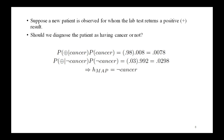We notice that while the posterior probability of cancer is significantly higher than its prior probability, the most probable hypothesis is still that the patient does not have cancer. As this example illustrates, the result of Bayesian inference depends strongly on the prior probabilities. In this example the hypotheses are not completely accepted or rejected, but rather become more or less probable as more data is observed. In the next class I will discuss Bayes theorem and concept learning.